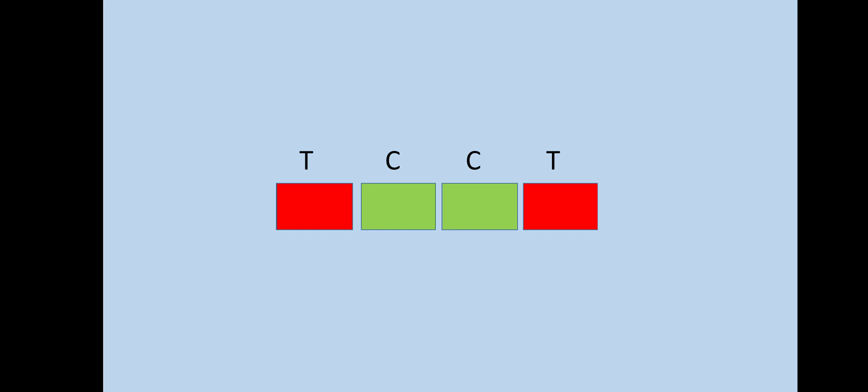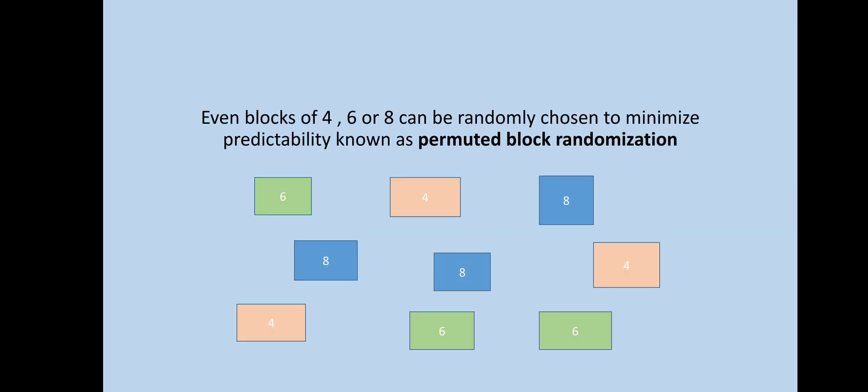There is a problem, however: the fourth participant's group assignment was already known and anticipated. To overcome this problem, even the block sizes can be randomized — there is no fixed number of participants per block; blocks can be of 4, 6, or 8 participants. This type of randomization is known as permuted block randomization.